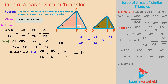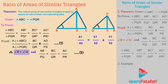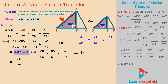Now consider triangle ABD and triangle PQS. Angle B is equal to angle Q from relation 2. Angle ADB is equal to angle PSQ, which is equal to 90 degrees. Therefore, triangle ABD is similar to triangle PQS by AA similarity criteria. Therefore, AB divided by PQ is equal to AD divided by PS.